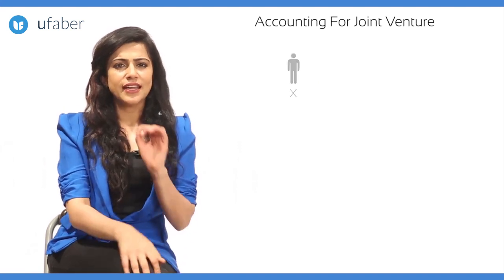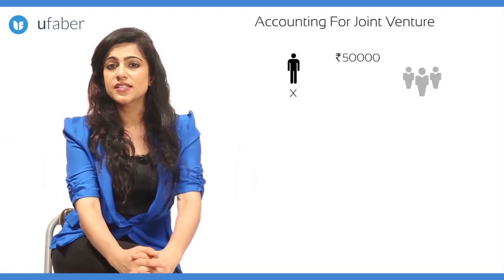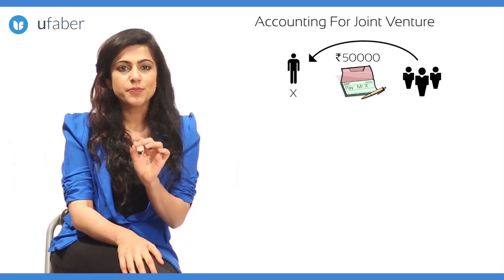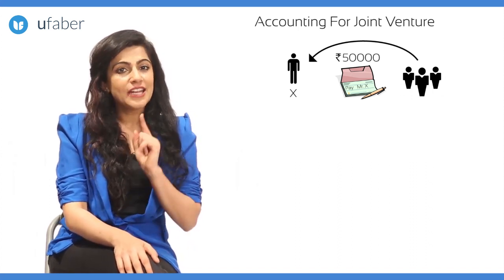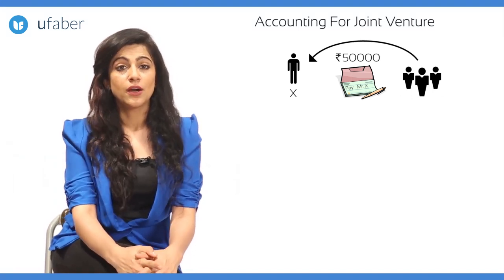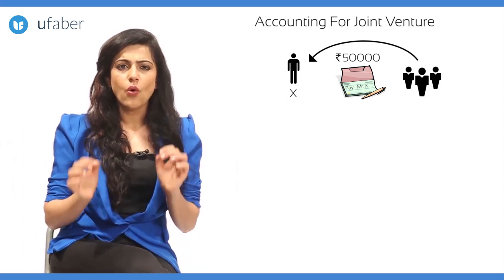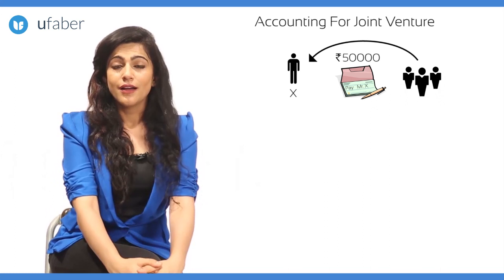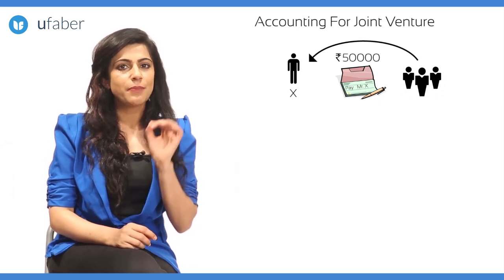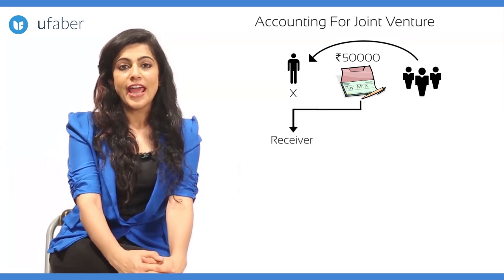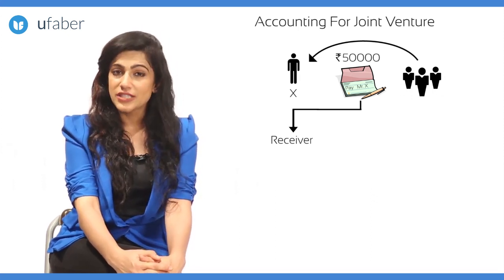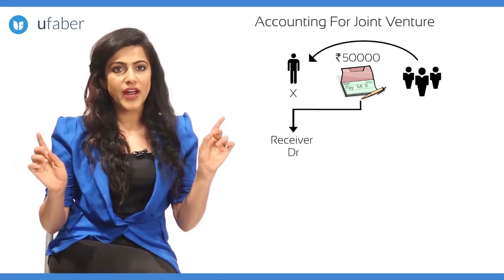In the next payment of rupees 50,000, the customer gave an account payee cheque in the name of X. The amount belongs to the joint venture but cannot be credited to the joint bank account as the cheque is in the name of X. In this situation, the amount can be taken by Mr. X. X, being a co-venturer, is a personal account. The golden rule for personal accounts is debit the receiver, credit the giver.